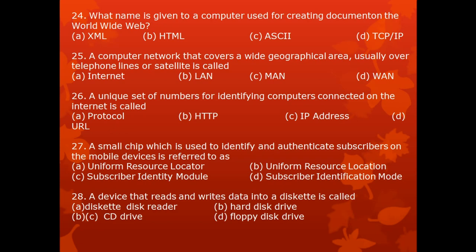Question 26. A unique set of numbers for identifying a computer connected on the internet is called: A. Protocol, B. HTTP — HyperText Transfer Protocol, C. IP address — Internet Protocol Address, D. URL — Uniform Resource Locator.